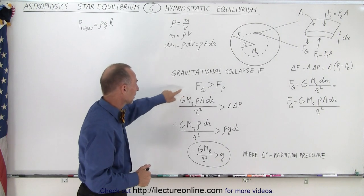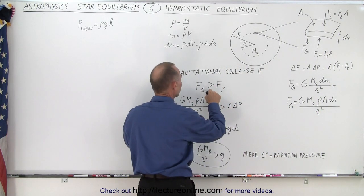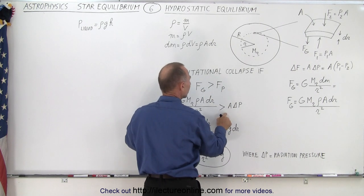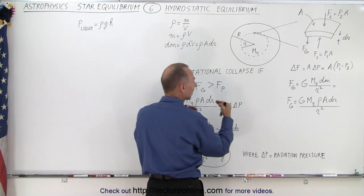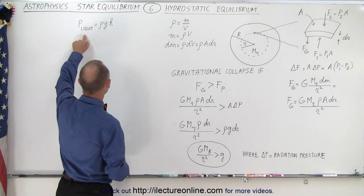So what we're going to do now is we're going to take the force of gravity, which we define over here, and say that it must be greater than the force due to pressure. It's going to be the area times the difference in the pressure between the top and the bottom. How do we get that difference in the pressure?